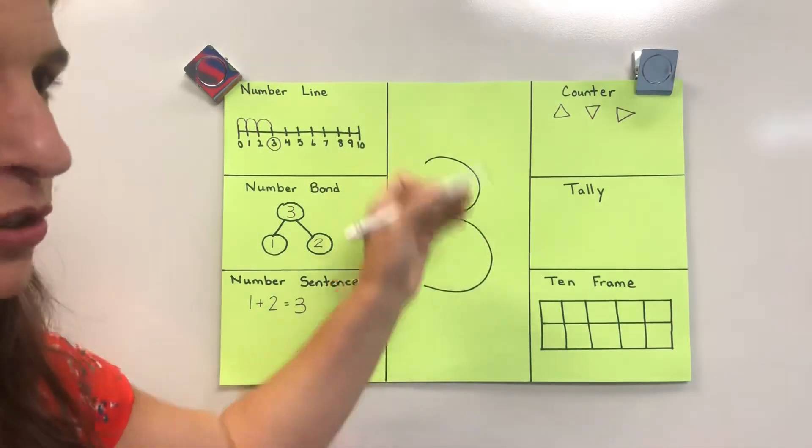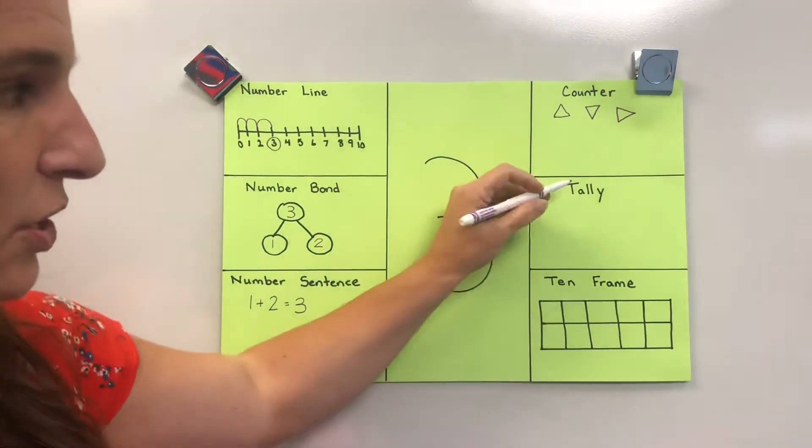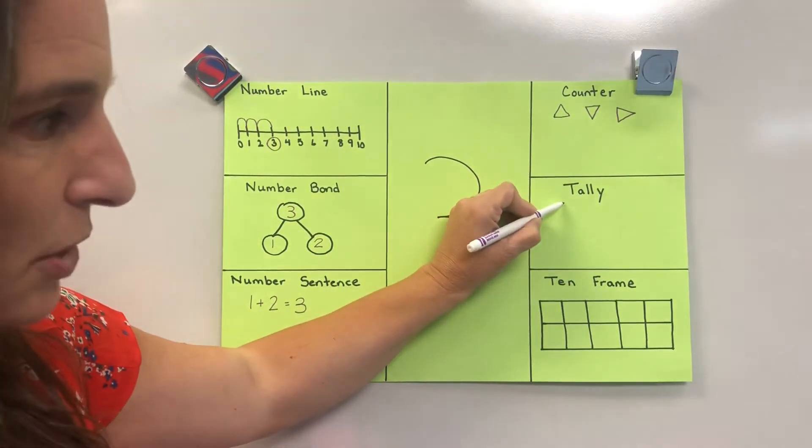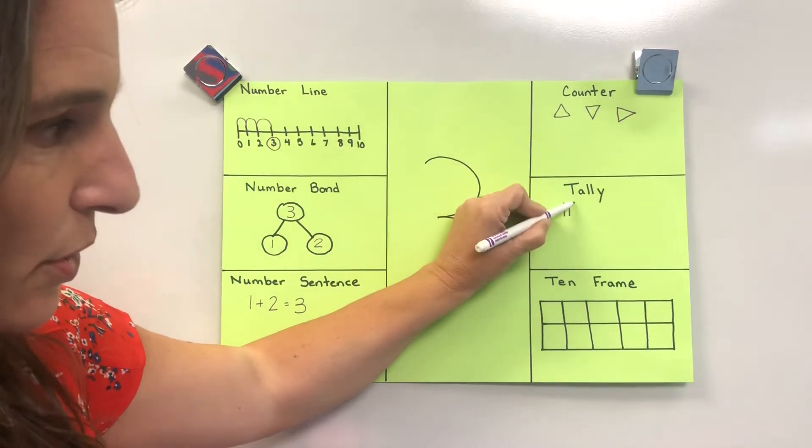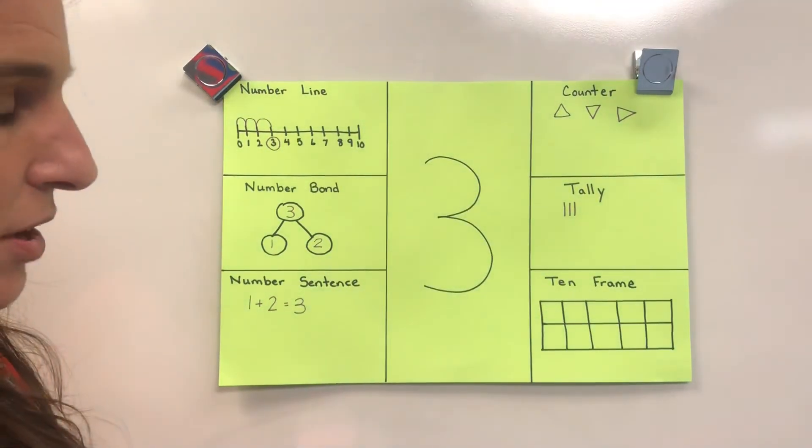Tally marks are just lines. Three tally marks would be one, two, three.